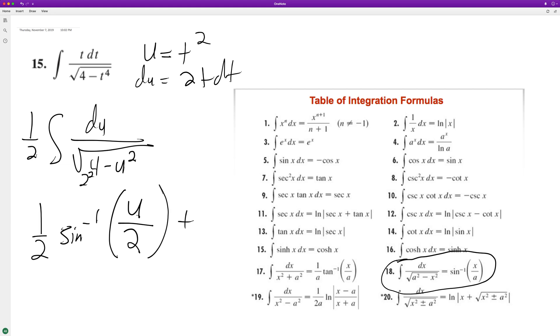And then plus c. So subbing back in, we end up with one-half arcsine of t squared over two plus c.